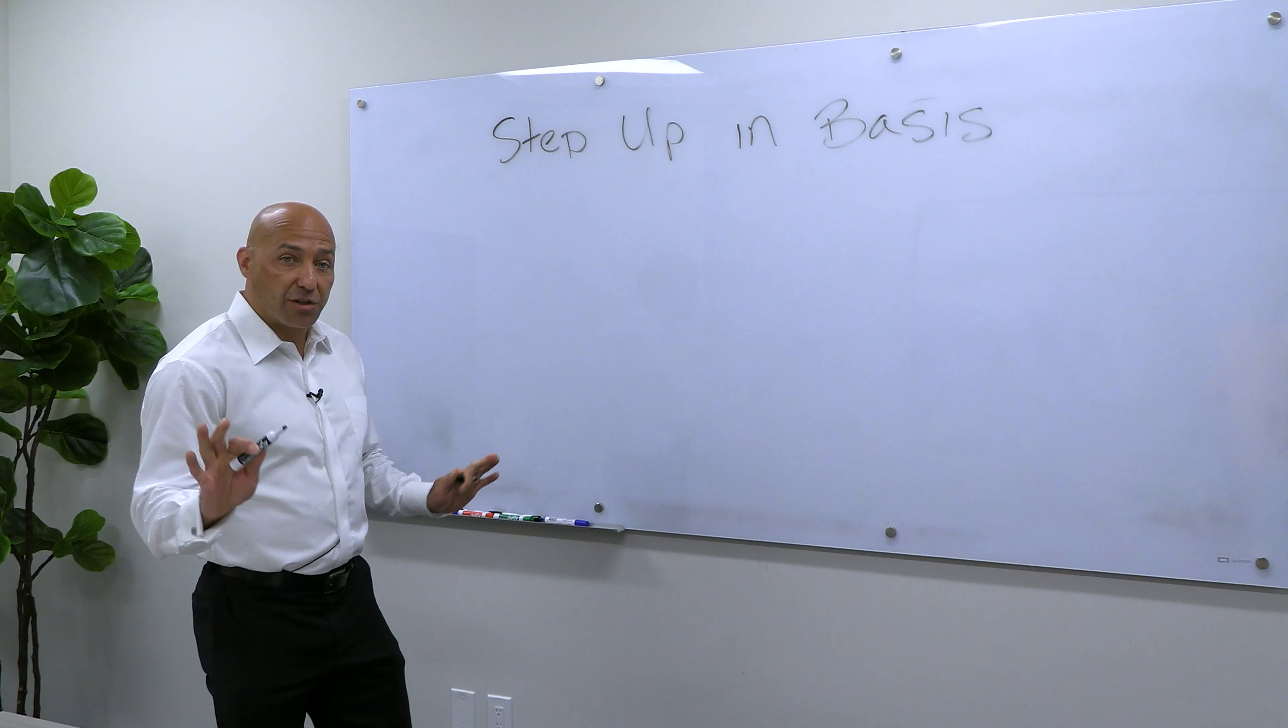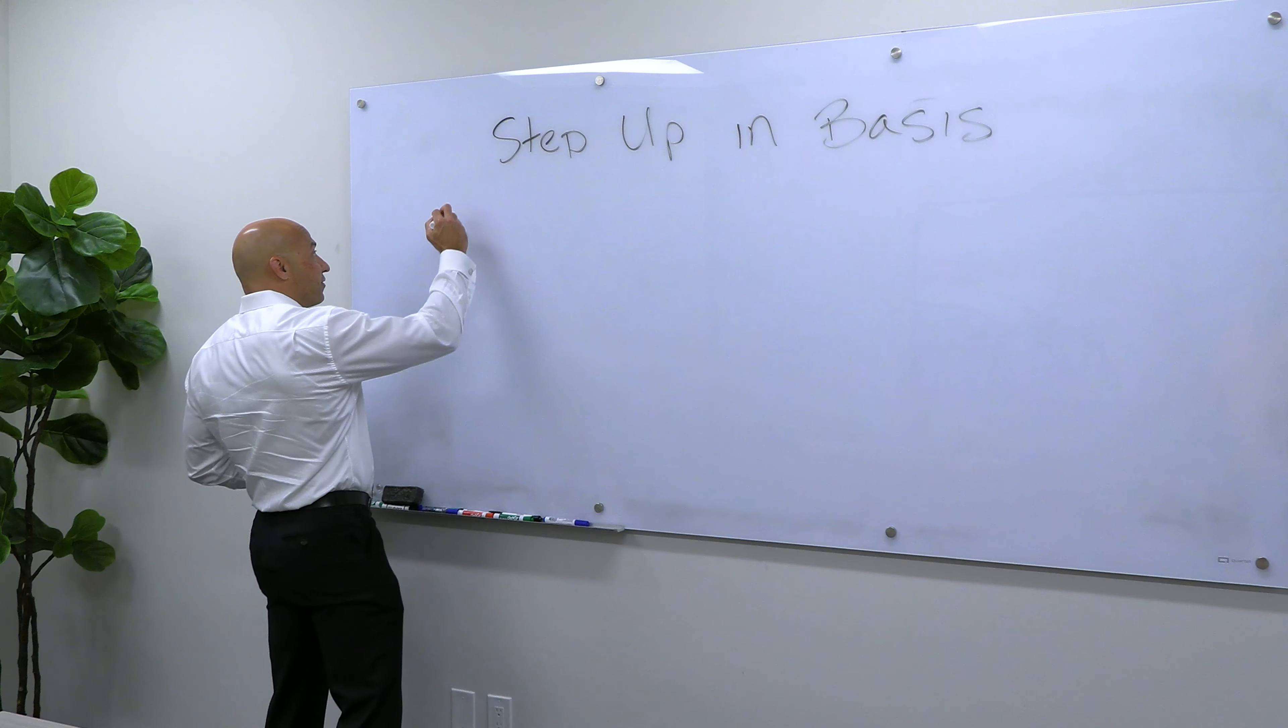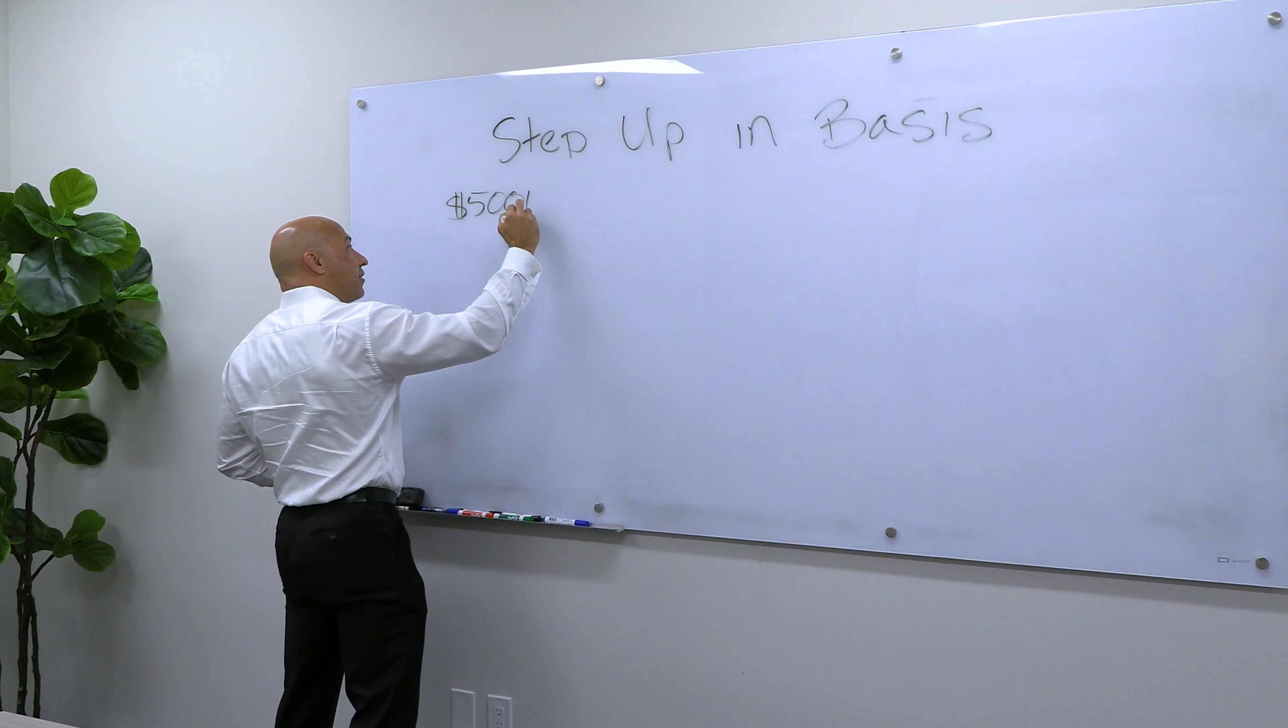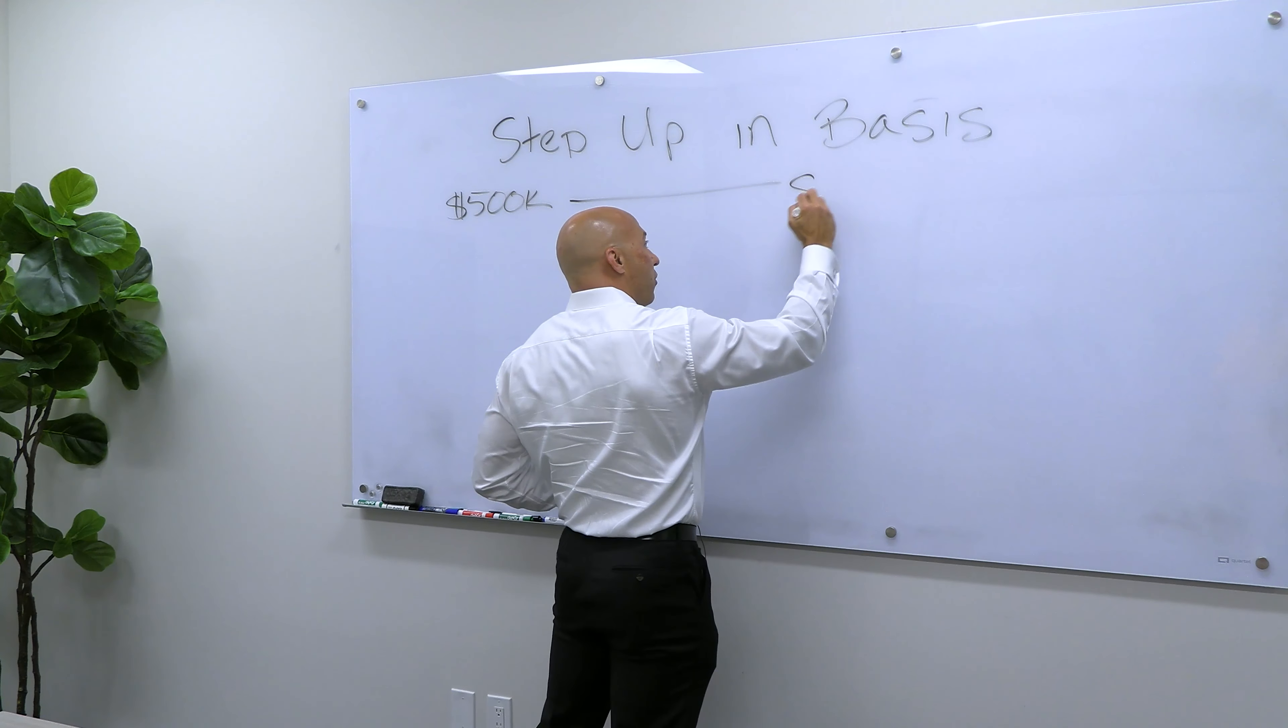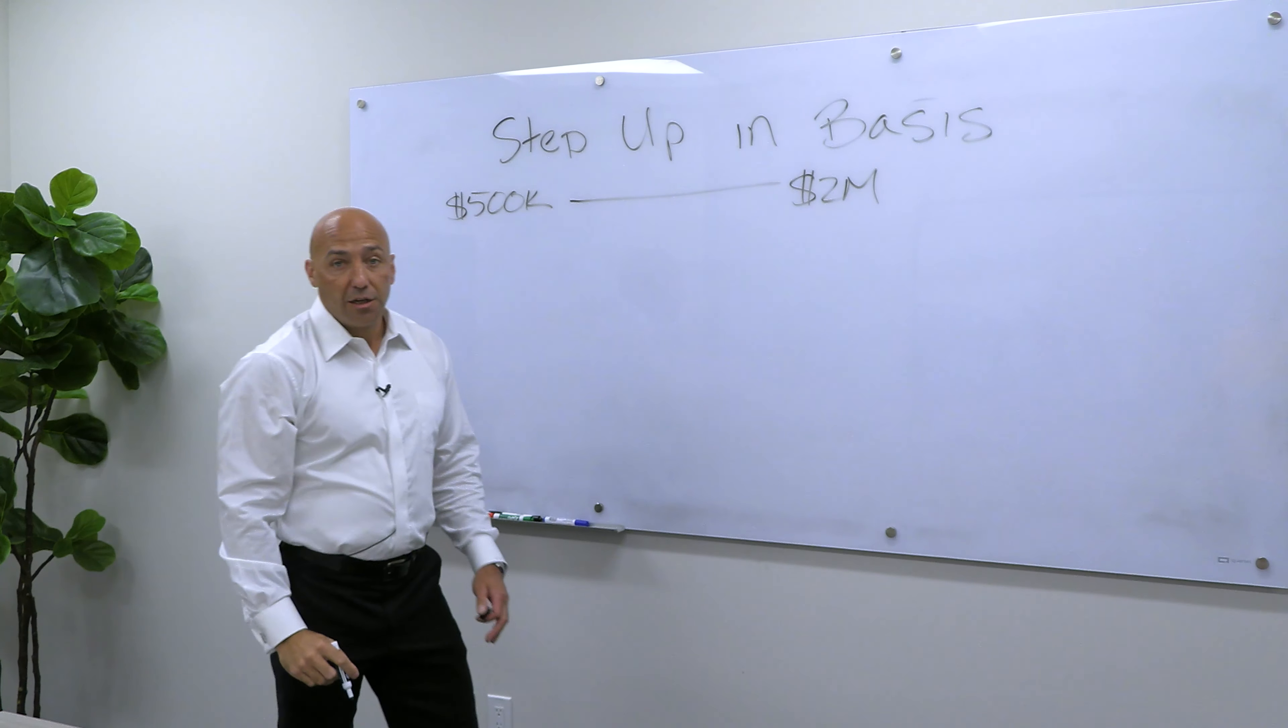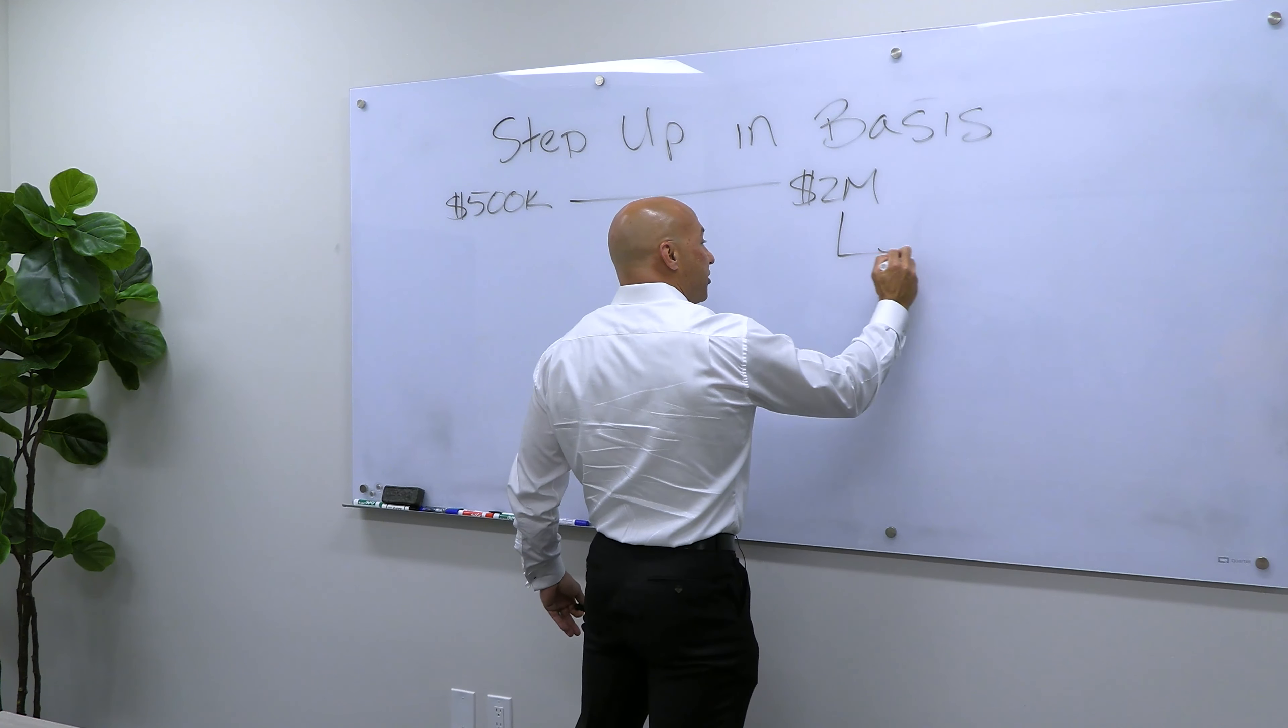So the way it works currently is let's assume that I purchased a piece of real estate, a property, a long time ago and I paid $500,000 for it. And let's say that over the years that property is now worth $2 million. So at my death, this passes to my children.